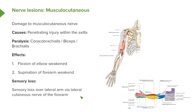In terms of sensory loss, damage to the musculocutaneous nerve — via the lateral cutaneous nerve of the forearm — leads to sensory loss over the lateral forearm. We can see here that the musculocutaneous nerve gives rise to the lateral cutaneous nerve of the forearm, which we can see running along this region. So damage here would lead to loss of sensation on that region of the forearm.